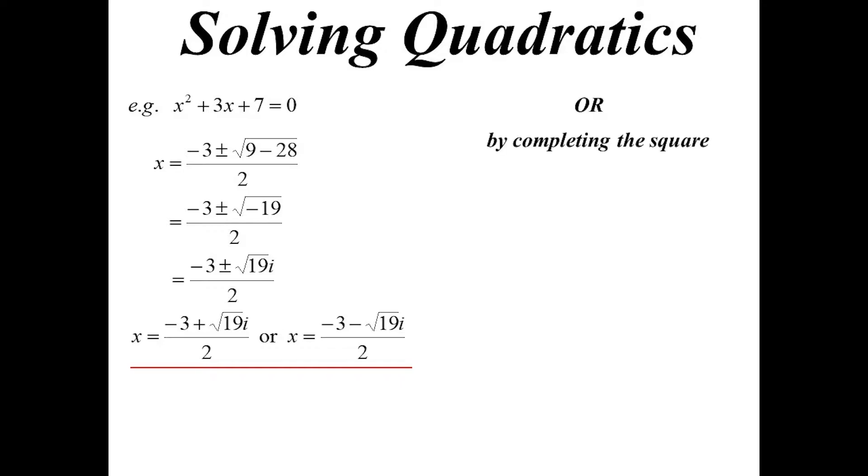Every quadratic can be done by completing the square now. We can always turn it into the difference of two squares. So when I complete the square on this one, I get X plus 3 on 2 squared plus 19 on 4. And in the past, we'd say, oh, we've got a problem here.